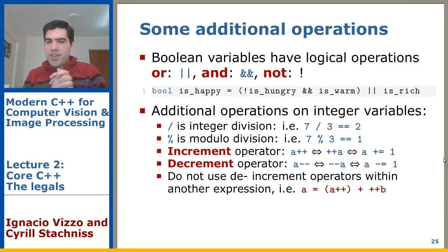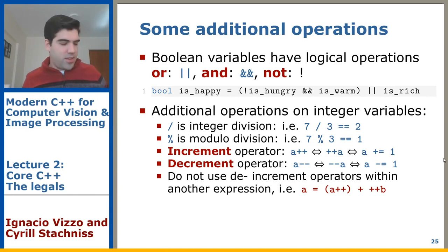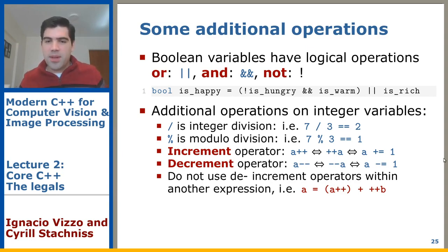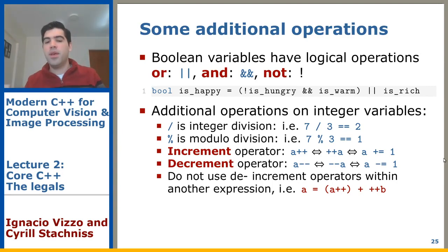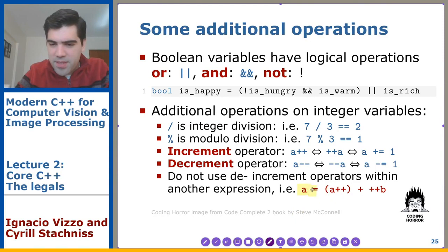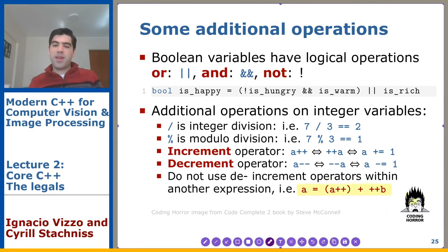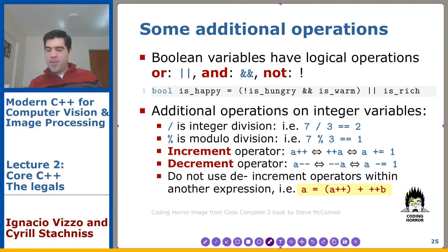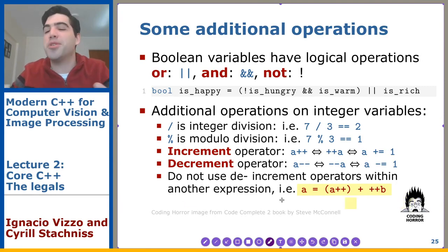You can also do operations with boolean variables: the OR operator, the AND operator, and NOT. The syntax is inherited from C, so it's the same as C or Java. For example: if (not hungry AND warm) OR rich, then the boolean variable 'happy' will be true. The only thing I'd never recommend is using increment operators in complex combined expressions — it's legal C++ but you'll most likely get the wrong answer for two integral numbers.